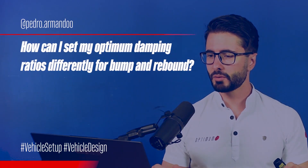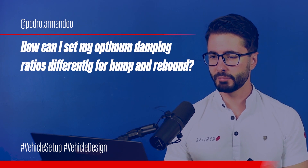How can I set my optimum damping ratios differently for bump and rebound? First, let's think about the overall damping — the average between bump and rebound. This is a very good metric to follow, since it's one of the main factors dictating car behavior and ride quality. When we speak about the bias between bump and rebound, it will be heavily dependent on driver feedback, platform control, and dynamic ride height.